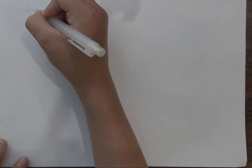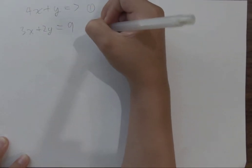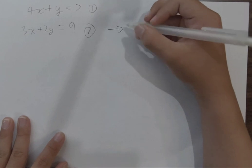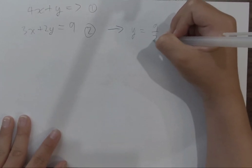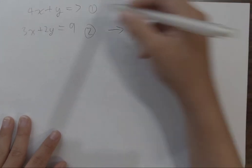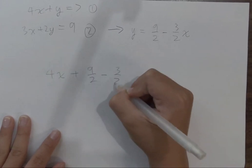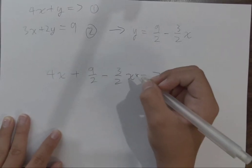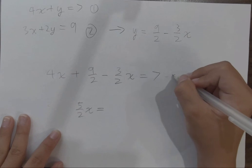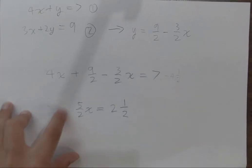The substitution method. Let me give you an example: 4x plus y equals 7, and 3x plus 2y equals 9. First, number your equations and turn one of your simplest equations into either x equals or y equals. In this case, I'll do y equals. Y equals 9 halves minus 3 halves x. Let's substitute this for the y: 4x plus 9 halves minus 3 halves x equals 7. Then 5 halves x equals 2 and a half.